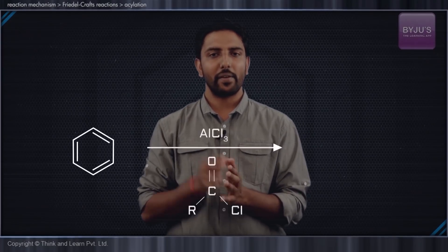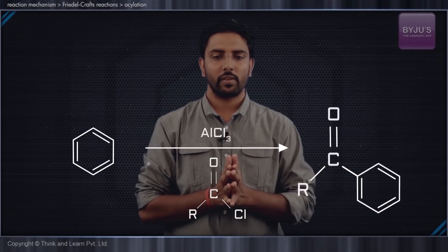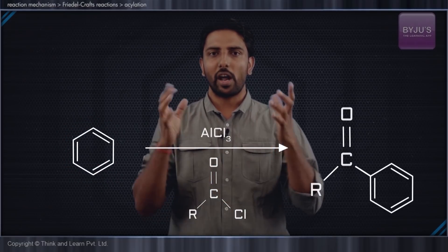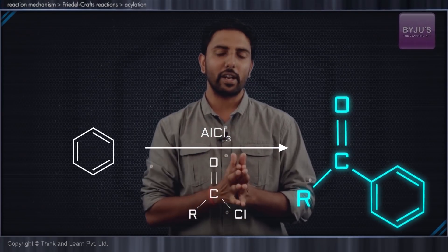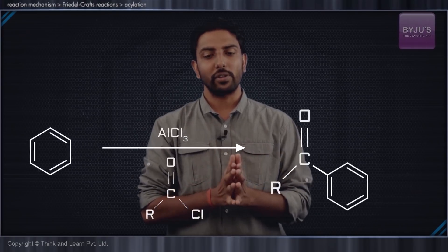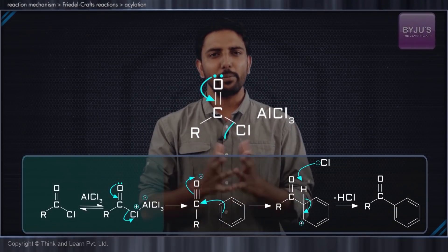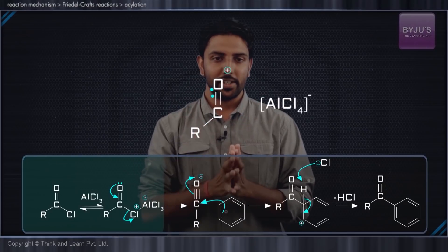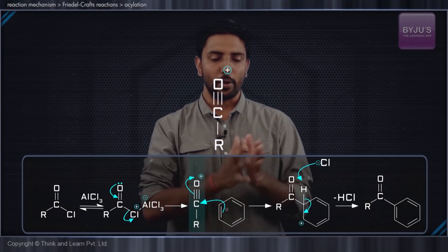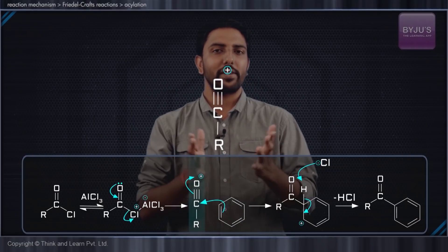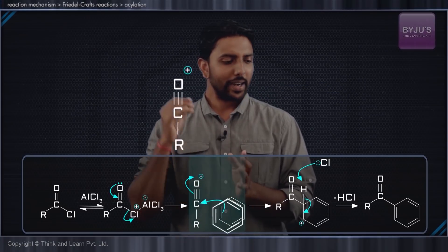We have the benzene ring and we have an acyl halide with a suitable anhydrous AlCl3, which is the Lewis acid, and we have the products. AlCl3 does what it always does best — it removes the halide or chloride ion from the reagent and this becomes a really powerful electrophile. This electrophile is the acylium ion, and if you look at the structure, this carbon will be sp-hybridized.